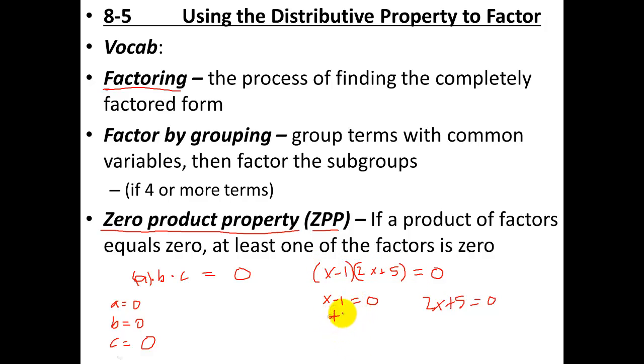And so then we can solve these. We can say plus one, plus one. So x equals one. And then over here we can do minus five, minus five. And then 2x equals negative five. And then divide by two. So x equals negative five halves and x equals one would be the two possible solutions, also called zeros, of this polynomial. So learning to factor allows you to then use the zero product property to actually solve.